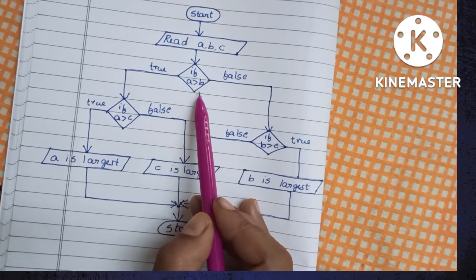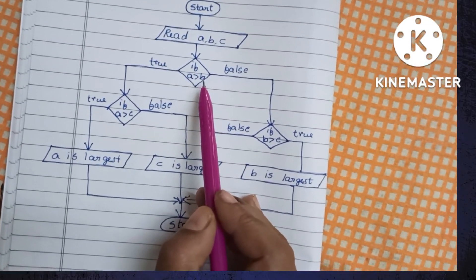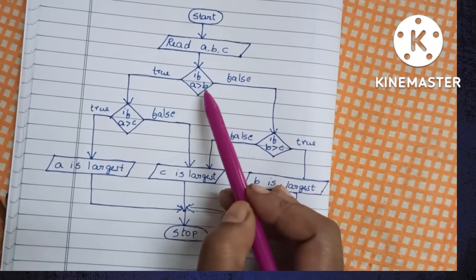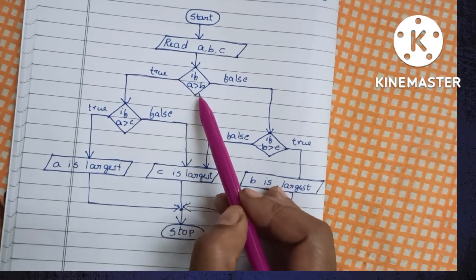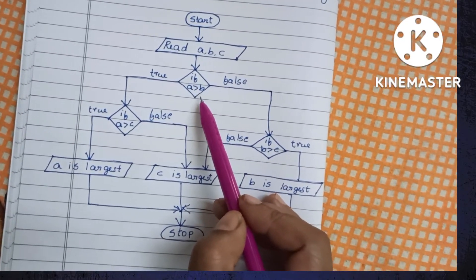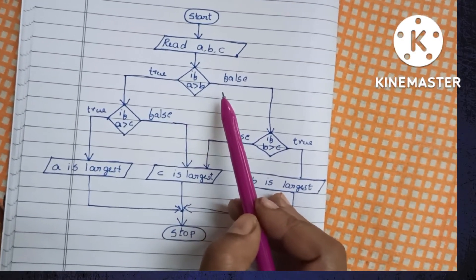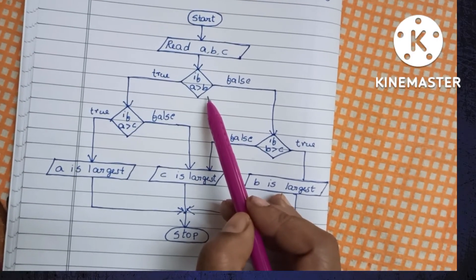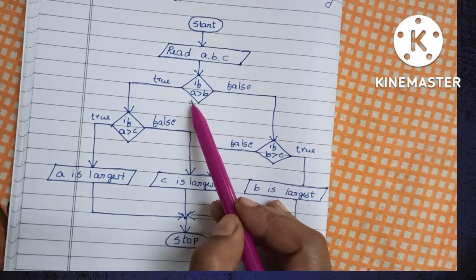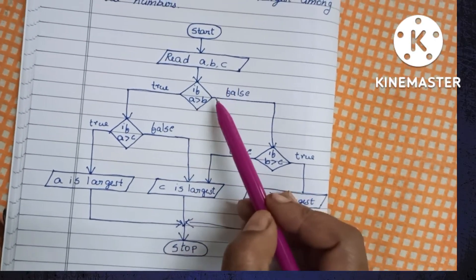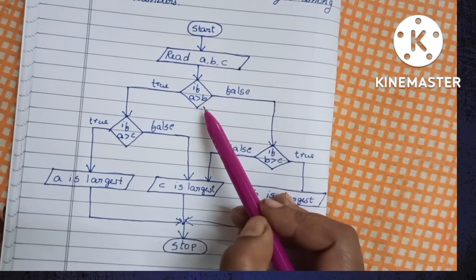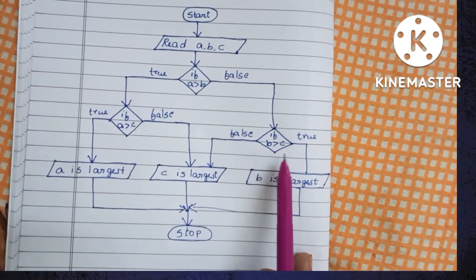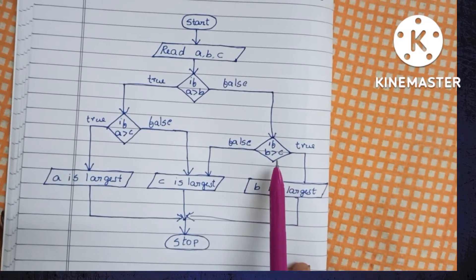If A greater than B is false, B is the greater number than A. That time, we have to compare B with C. If B greater than C, this comparison determines the final output.